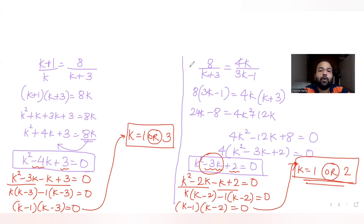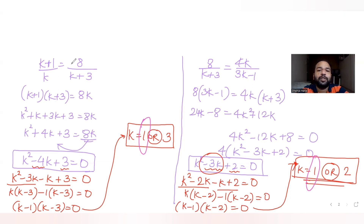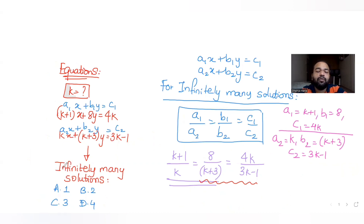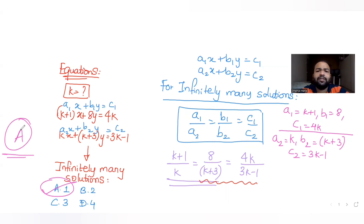The common value of k present in both sets of solutions is 1. k = 3 does not satisfy the second pair of ratios, and k = 2 does not satisfy the first pair. Therefore, the only value is k = 1, and the correct answer is option A.